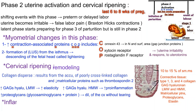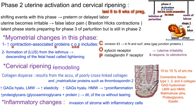Inflammatory changes in phase 2 are accompanied by invasion of the stroma with inflammatory cells, leading to increases in matrix metalloproteinase enzyme activity, causing collagen breakdown and cervical ripening.